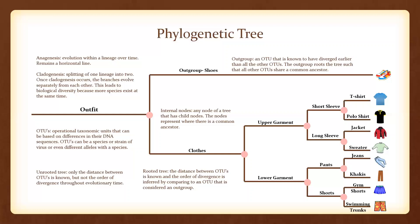You may have also noticed the pink dots on the tree. These pink dots represent internal nodes, which are any node of a tree that has child nodes. The nodes also represent where there is a common ancestor. Thank you for listening and have a great day.